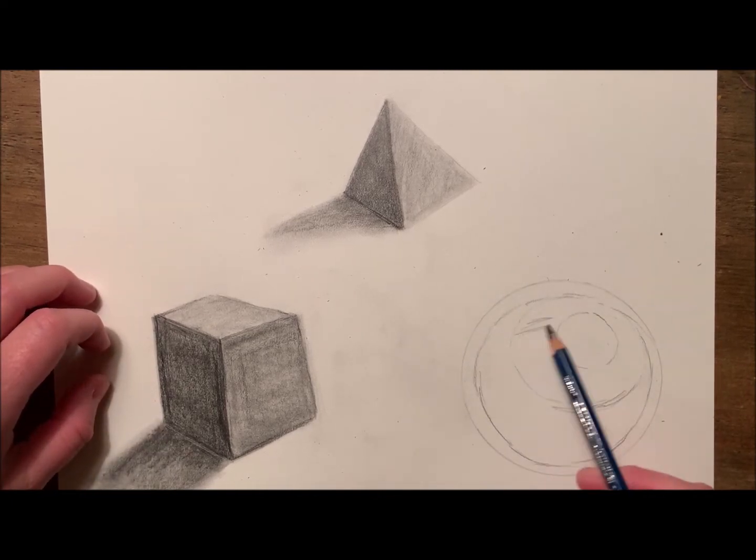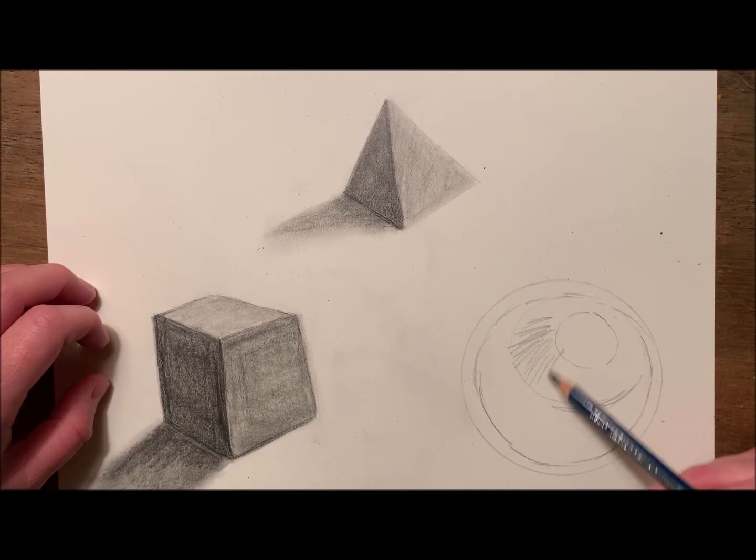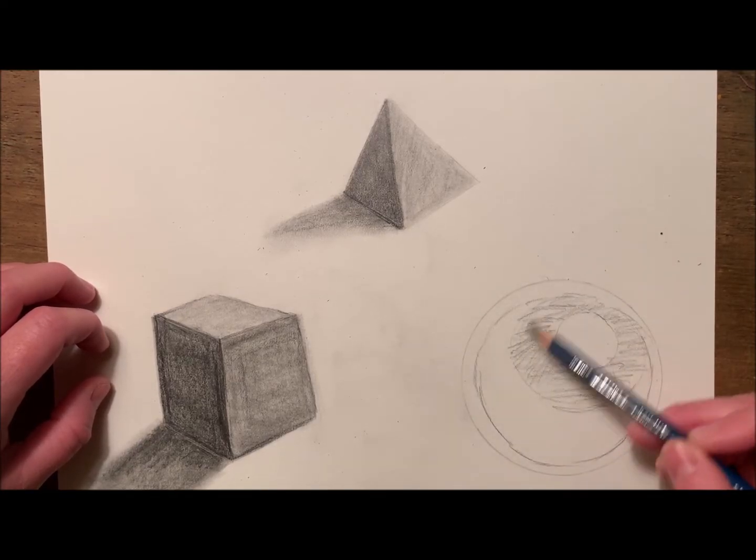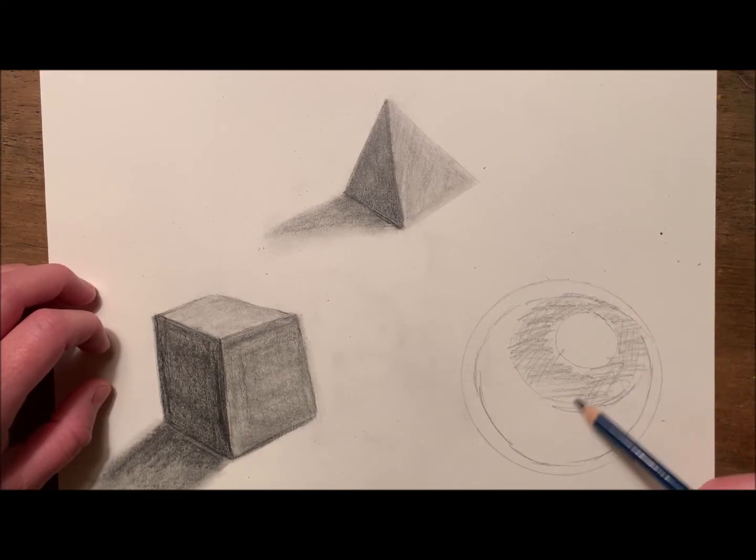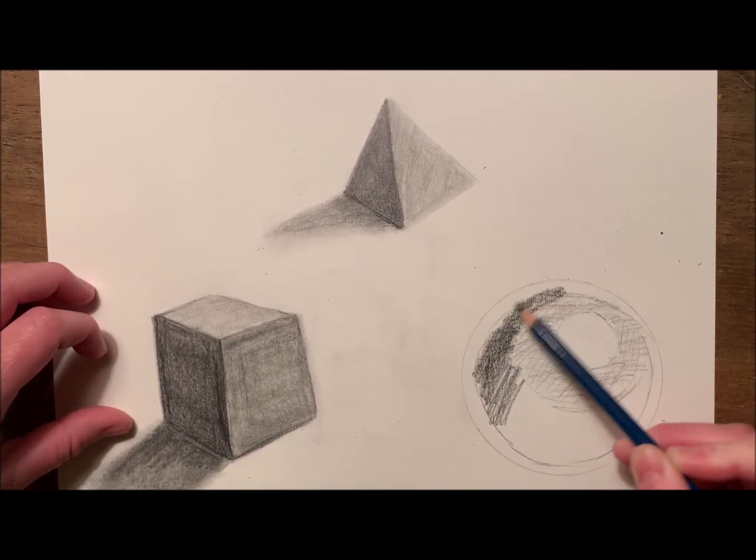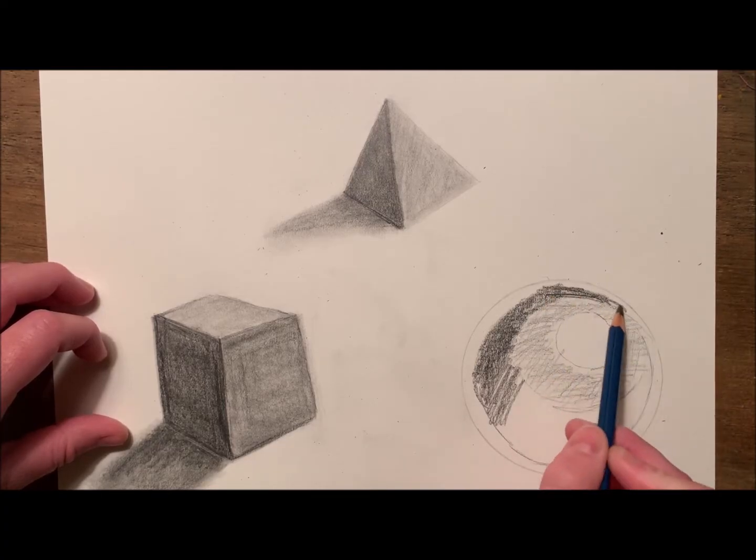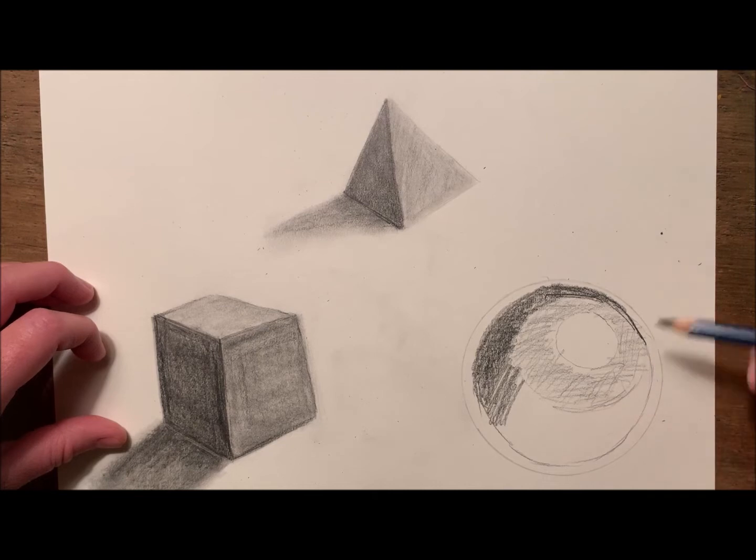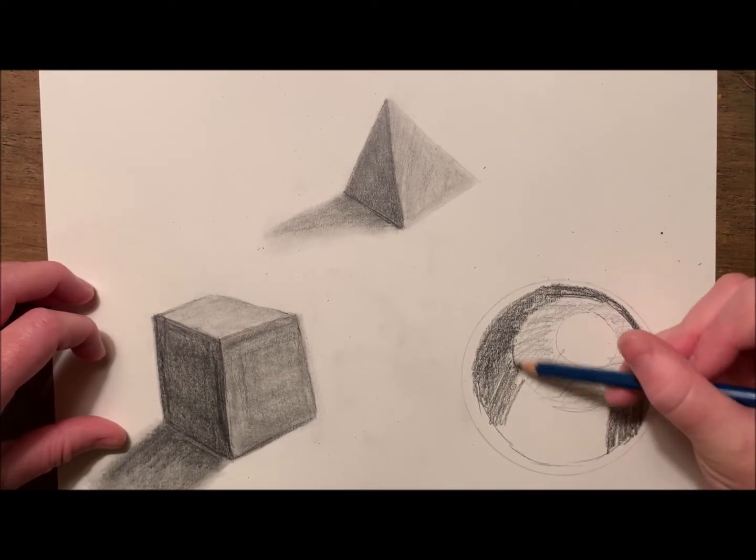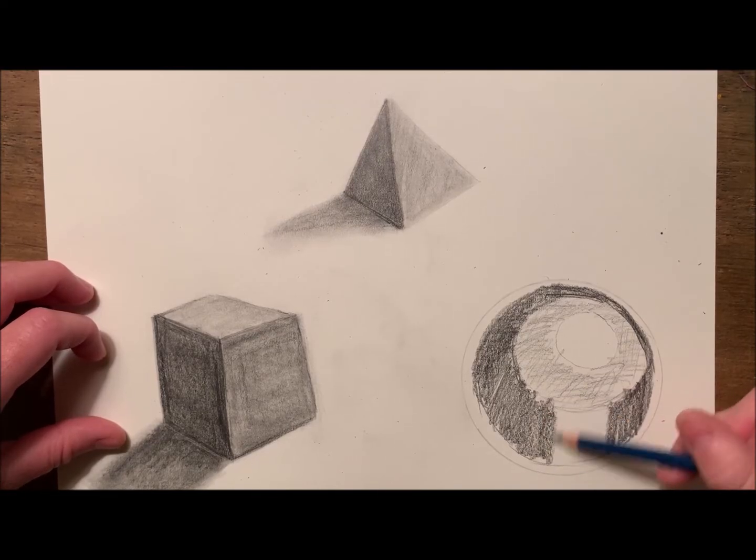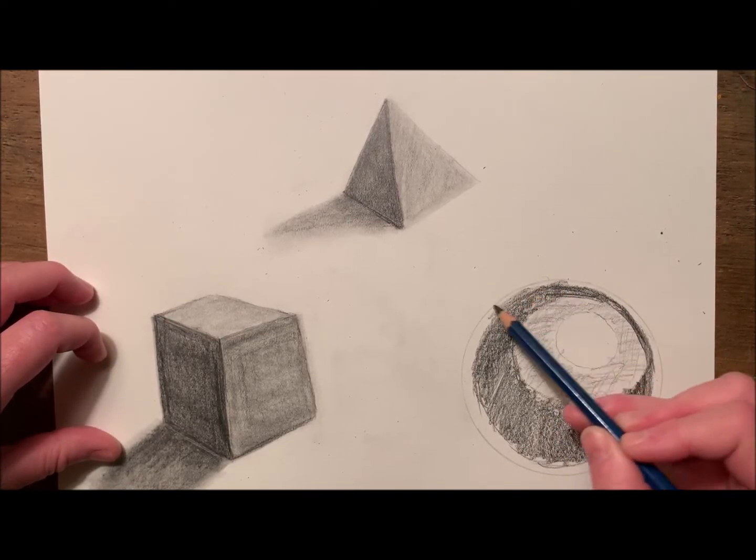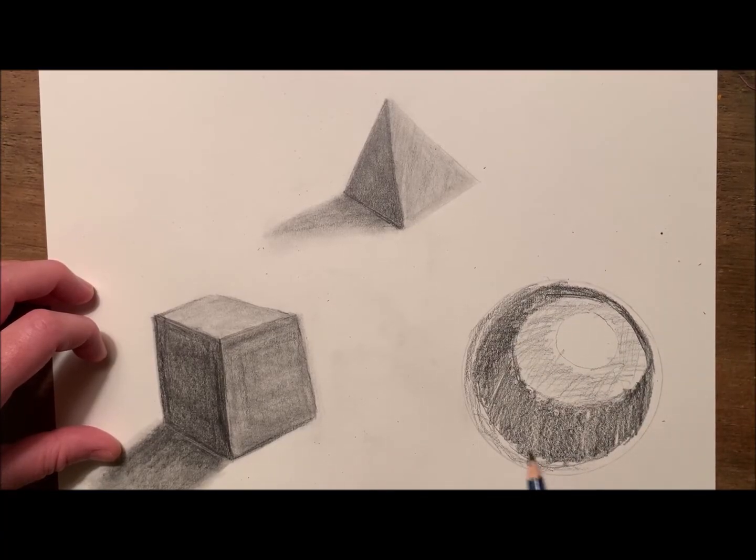Being careful not to shade in that first circle, I'm going to use my lightest value around that circle. The next layer is my darkest layer, so I'm going to use a heavier pressure to fill that in. And the outer layer is a little lighter, so this will be a medium value.